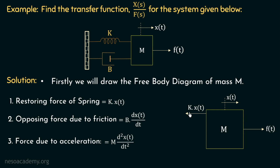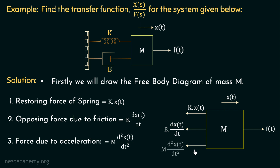Similarly, the second opposing force is the opposing force due to friction, which is equal to b multiplied with dx(t)/dt, and it acts to the left hand side. In the same way, the third opposing force is the force due to acceleration — this is the opposing force of the body due to its own mass, which resists the change in its original position, and it is equal to m multiplied with d²x(t)/dt², acting to the left hand side. These are the total forces experienced by the body of mass M, and this is the free body diagram of mass M.